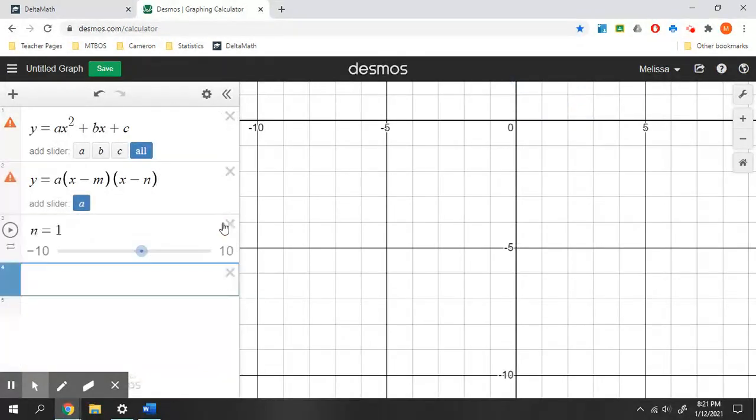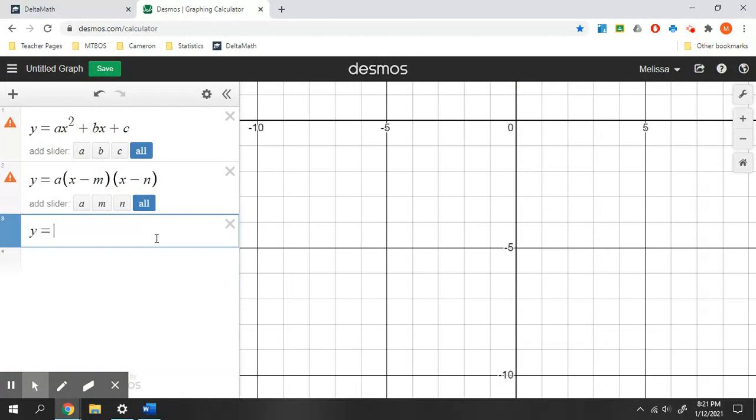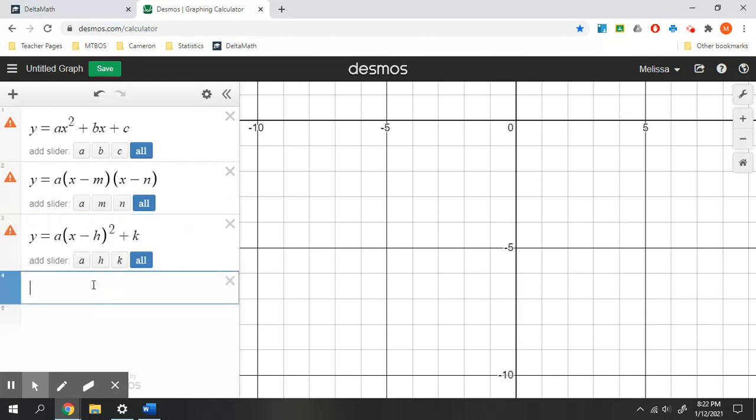Vertex form is going to look like this: y equals a times x minus h squared plus k. This gives us our vertex - how far left and right we go, and then how far up or down, along with our shape.